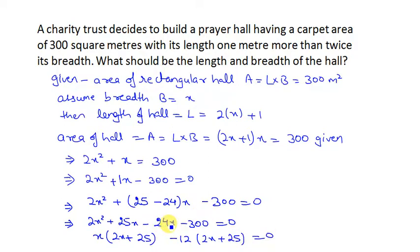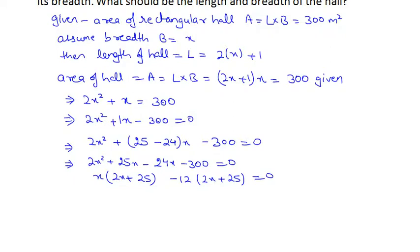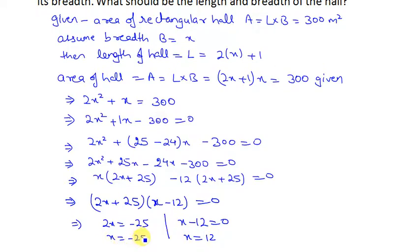Now, 24 divided by 2 is 12, and 300 divided by 12 is 25. So 2x plus 25 times x minus 12 equals 0. Here I have 2x plus 25 equals 0 or x minus 12 equals 0. So x equals 12 or x equals minus 25 by 2, which is negative and not possible.